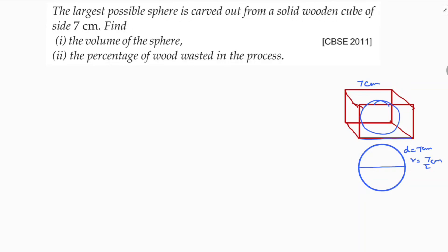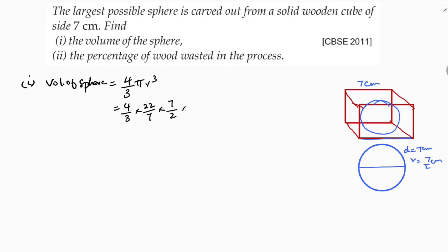So the first question is easy — volume of sphere. The formula for volume of sphere is 4 by 3 pi r cubed. So here: 4 by 3, pi value is 22 by 7, and radius is 7 by 2, times 7 by 2, times 7 by 2.